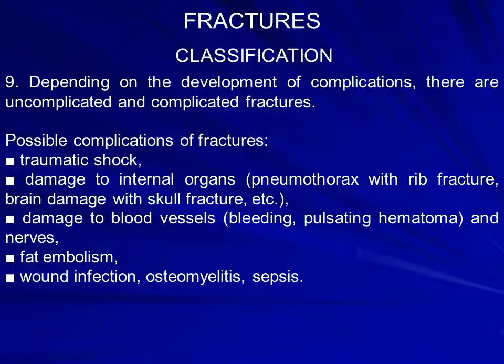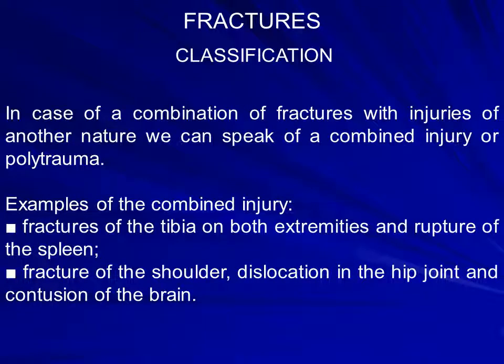Depending on the development of complications, there are uncomplicated and complicated fractures. Possible complications include: traumatic shock, damage to internal organs, pneumothorax with rib fracture, brain damage with skull fracture, damage to blood vessels, bleeding, pulsating hematoma, rupture of nerves, fat embolism, wound infections, osteomyelitis, and sepsis. Examples of combined injury (polytrauma) include: fractures of the tibia on both extremities with rupture of the spleen, or fracture of the shoulder with hip joint dislocation and brain contusion.